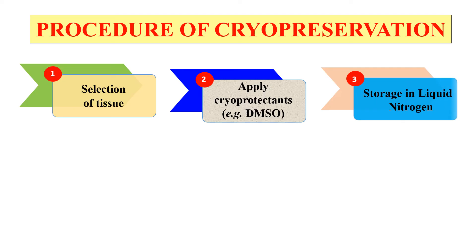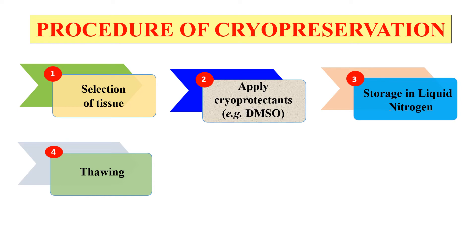In the third step, we store the cryoprotectant-treated tissue in liquid nitrogen, which has a temperature of minus 196 degrees, so they can be preserved for a very long time. When we want to reuse these cryopreserved stored tissues, we have to thaw them. In the thawing step, we bring our cryopreserved tissue to normal temperature — generally by placing the tissue in a water bath — so that we can reuse it.